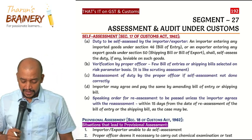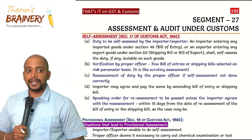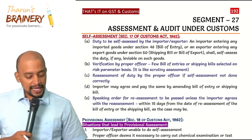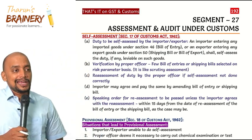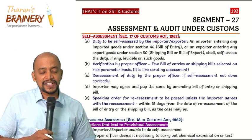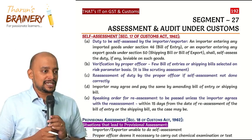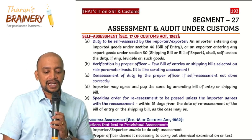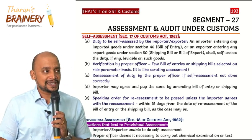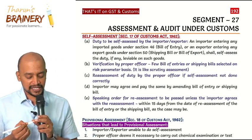Segment 27, page number 192 covers assessment and audit under customs. Under customs, we have self-assessment and provisional assessment. Self-assessment is given under Section 17, whereas provisional assessment is under Section 18 of the Customs Act.